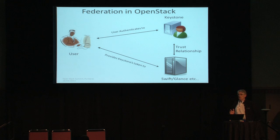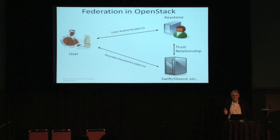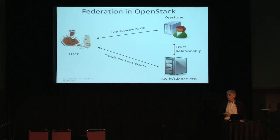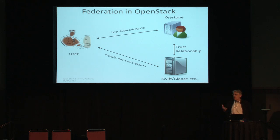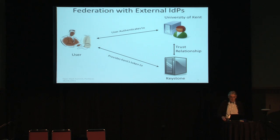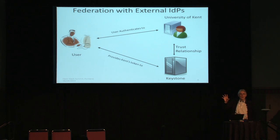Federation is already in OpenStack, though it's not called that. All the services — Swift, Glance, etc. — do not authenticate the user; they trust Keystone. The user goes to Keystone, authenticates, gets a token, and provides that token to Swift, Glance, or whatever service. What we're doing is extending that model so that now Keystone doesn't authenticate the user — your organisation does, my organisation does.